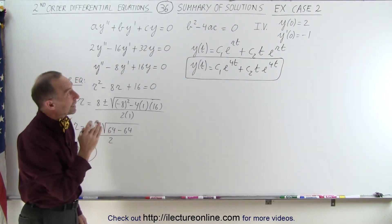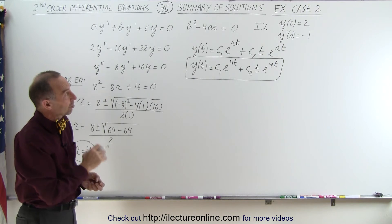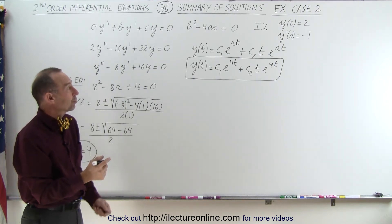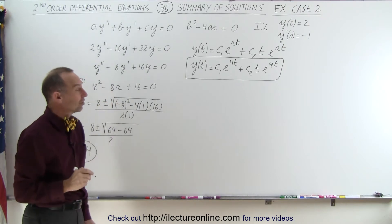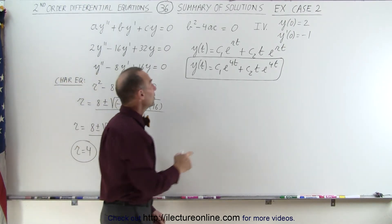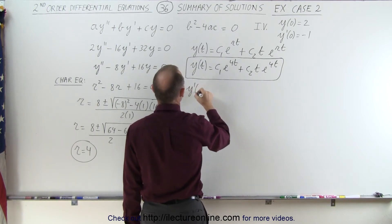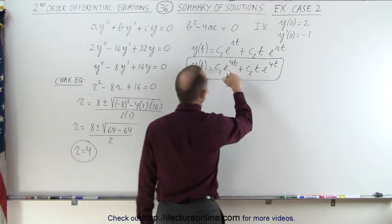Now, since we've been given the initial values at zero for y and y prime, we want to be able to use that information to find the constants c1 and c2, which means we need to find the derivative of this. And so y prime of t is equal to the derivative of this,